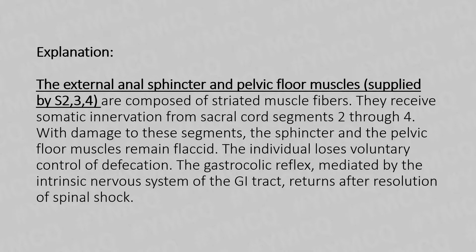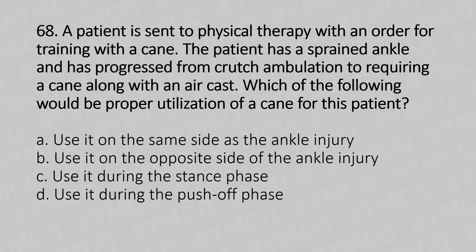Moving to our 68th question. A patient is sent to physical therapy with an order for training with a cane. The patient has a sprained ankle and progressed from crutch ambulation to requiring a cane along with a hard cast. Which of the following would be proper utilization of a cane for this patient? Option A: use it on the same side as the ankle injury. Option B: use it on the opposite side of the ankle injury. Option C: use it during the stance phase. Option D: use it during the push phase.